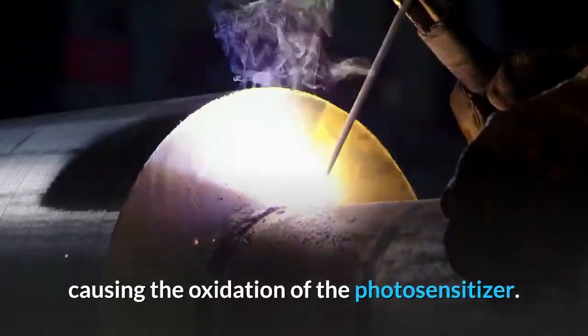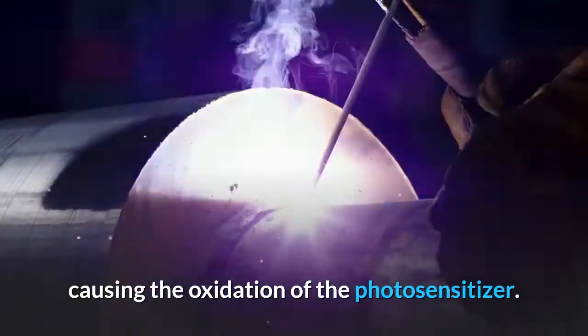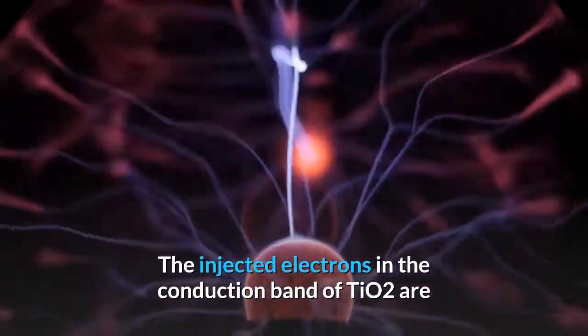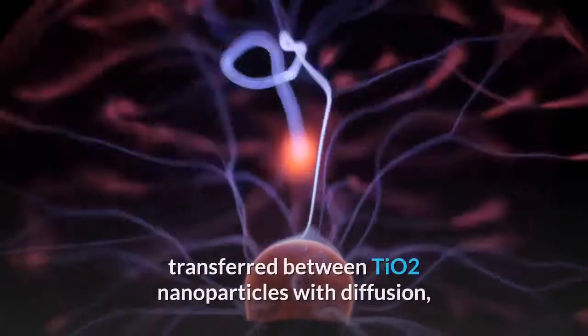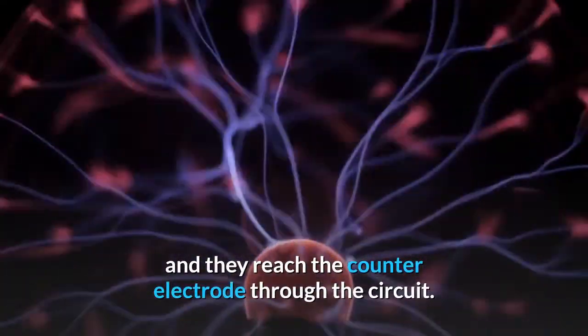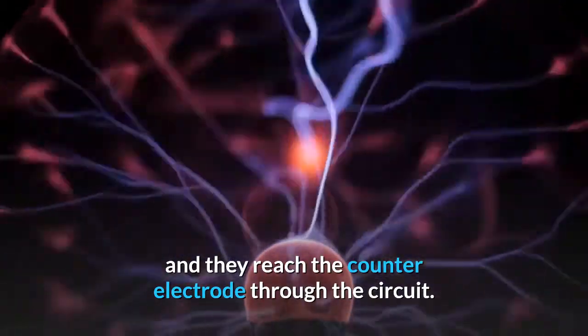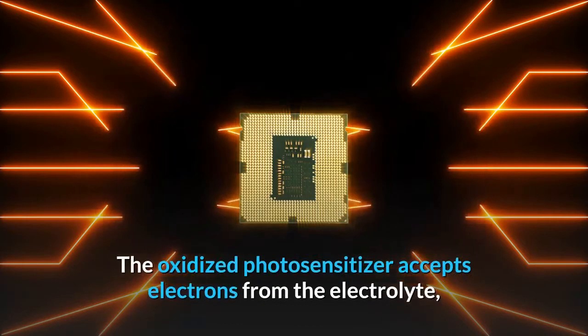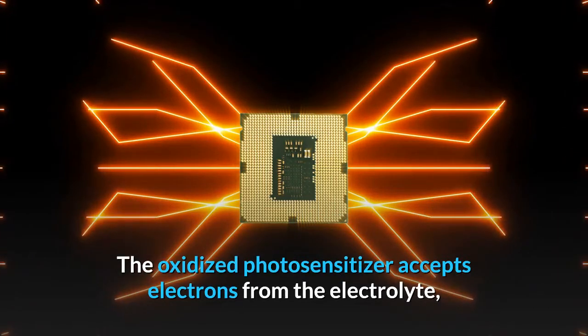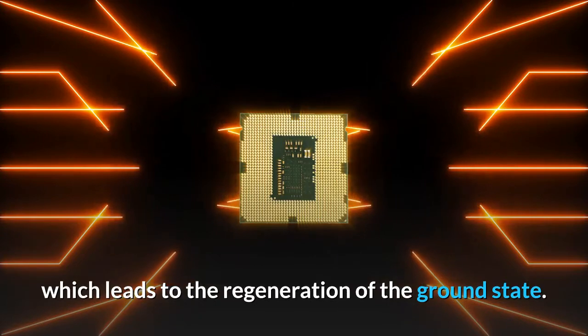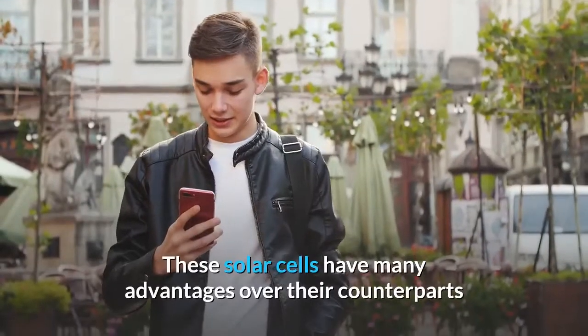The injected electrons in the conduction band of titanium dioxide are transferred between titanium dioxide nanoparticles with diffusion and they reach the counter electrode through the circuit. The oxidized photosensitizer accepts electrons from the electrolyte, which leads to the regeneration of the ground state.